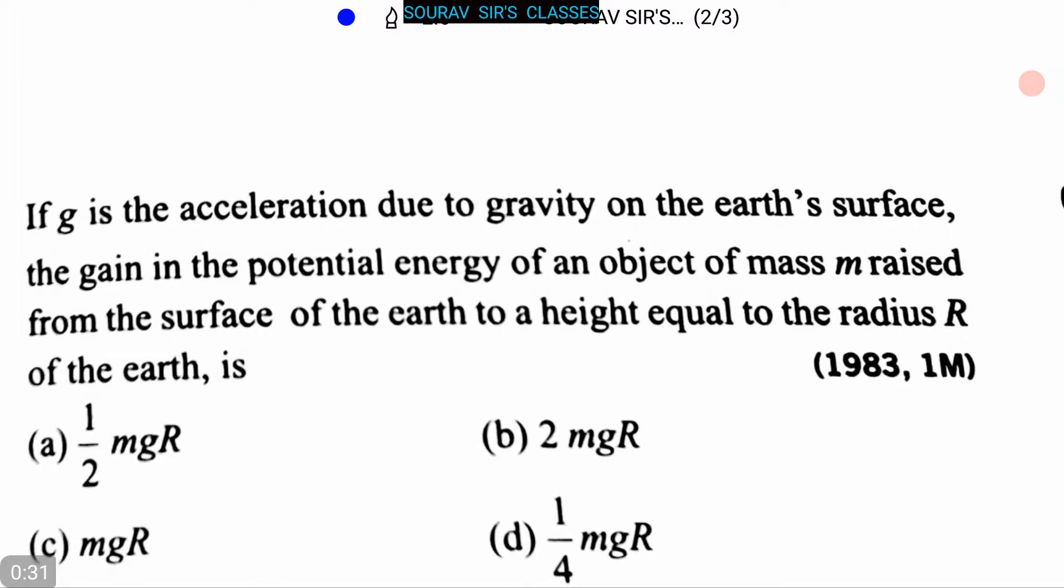If g is the acceleration due to gravity on the earth's surface, the gain in the potential energy of an object of mass m raised from the surface of the earth to a height equal to the radius R of the earth is: